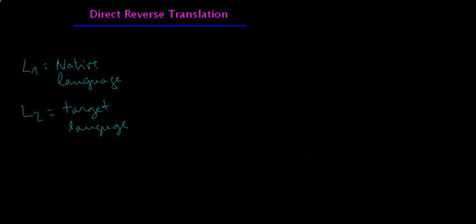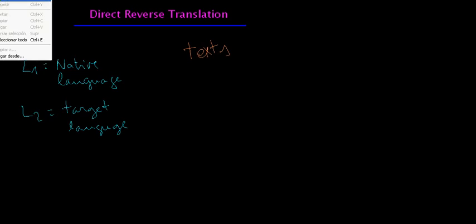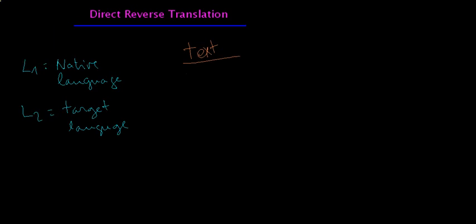The direct and reverse translation method is an interesting method you can use to learn languages. It's very easy to use. You need a text at your level in your target language.